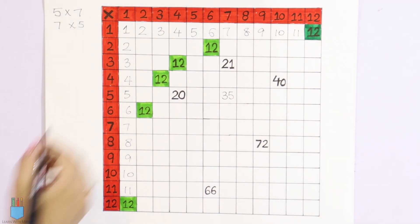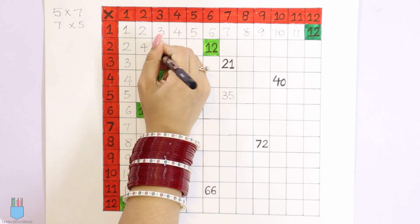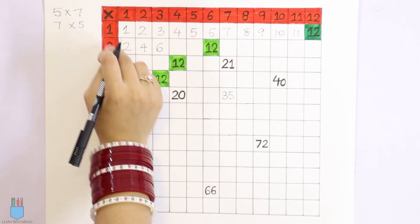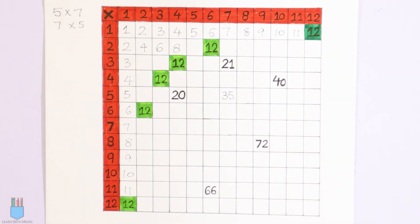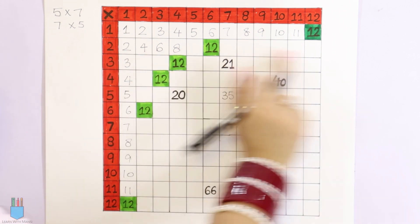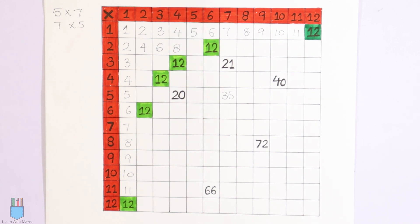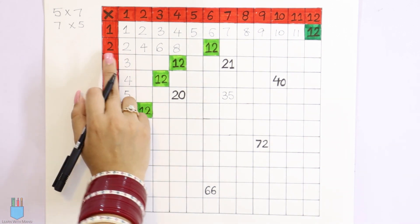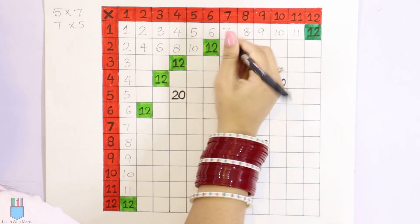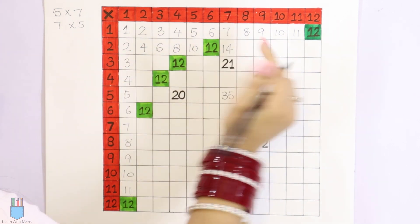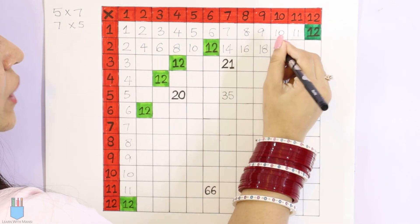Now let's see next. Looking at this box: 2 into 2 is 4, then 3 into 2 is 6, 4 into 2 is 8. So the 2 times table is going on. We have understood that the number written in front gives the table — whether we look horizontally or vertically. So: 2, 4, 6, 8, then 2 into 5 is 10, 2 into 6 is 12, 2 into 7 is 14, 2 into 8 is 16, 2 into 9 is 18, 2 into 10 is 20.